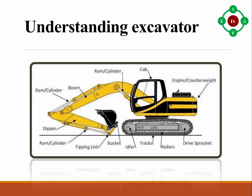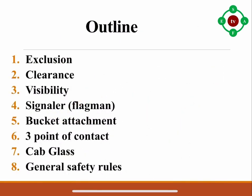Here is the complete diagram of an excavator that is widely used in the construction industry. Let's see its basic safety rules. The outline is: number one, exclusion; number two, clearance; number three, visibility; number four, signaler or flagman; number five, bucket attachment.